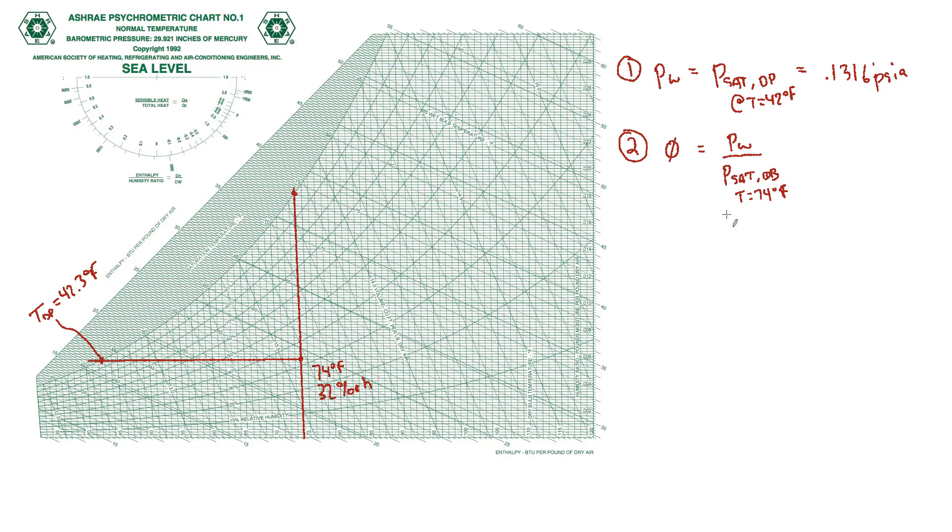And I've done that, and that number turns out to be 0.416. That's the maximum that the partial pressure of water vapor could be at 74 degrees. If it was 74 degrees and 100% relative humidity, then the partial pressure of water vapor would be that. But it's not 100% relative humidity, it's only 32%. And that's where this definition comes in.